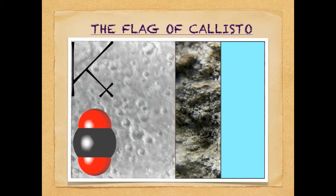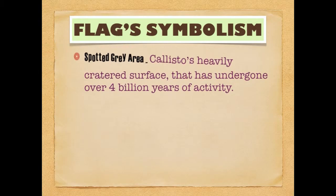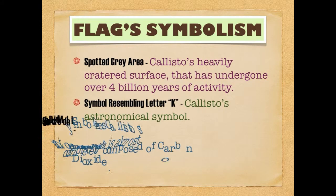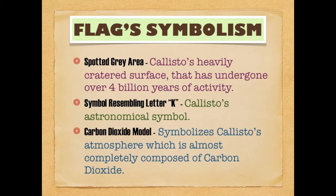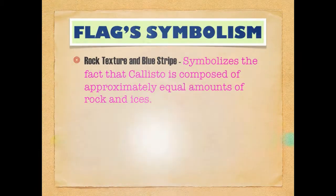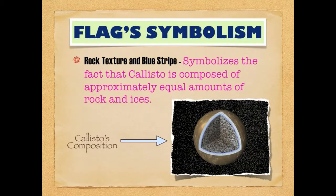This is a picture of my flag. On my flag, the spotted grey area represents Callisto's heavily cratered surface that has undergone over 4 billion years of activity. The symbol resembling the letter K was simply Callisto's astronomical symbol. The model of a carbon dioxide molecule symbolizes Callisto's atmosphere, which is almost completely composed of carbon dioxide. Finally, the rock texture and blue stripe symbolizes the fact that Callisto is composed of approximately equal amounts of rock and ice.